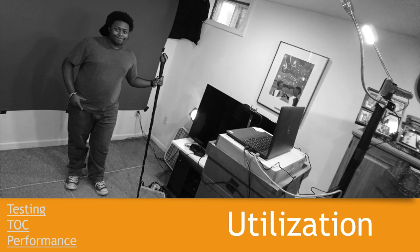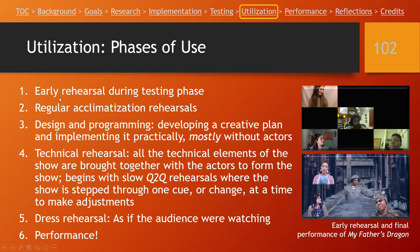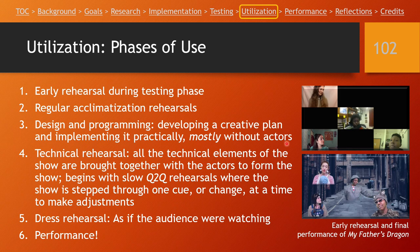This is a final look at how our system was set up — you can download this diagram if you want to take a closer look. Now we're into our use phase: how we use this system throughout the process. There are so many phases — from early rehearsals to keeping actors acclimatized to the system, which was very challenging because we had two different shows to rehearse at the same time and only one remote performance system to develop and implement simultaneously. There's a design and programming phase where we need to develop a creative plan we can implement in our broadcast software, and we have to do that without the actors.